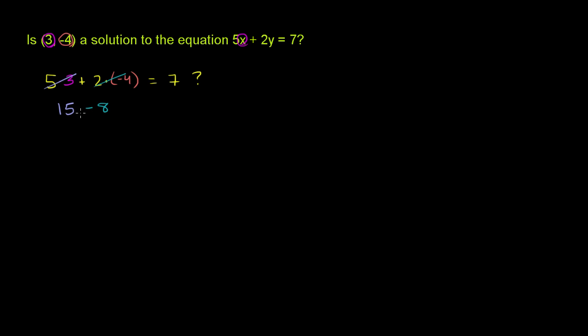And then 2 times negative 4 is negative 8. So the left-hand side simplifies to 15 minus 8, and this needs to be equal to 7. And of course, 15 minus 8 does equal 7. So this all works out. This is a solution. So we've answered the question.